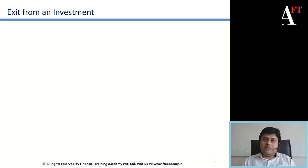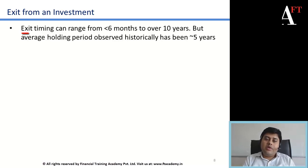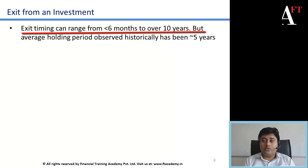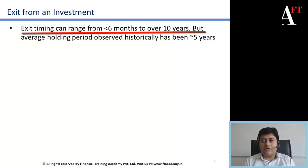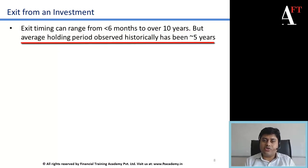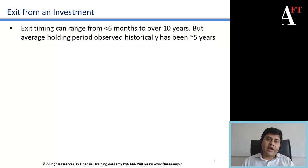Let's talk about the exit from an investment for a VC or a PE fund. The exit timing for a VC fund can range anywhere from as low as 6 months to over a decade or 10 years. But historically what has been observed is that the average holding period of a PE or VC investment has been typically 5 years. That is the kind of investment horizon that they invest in the company with.